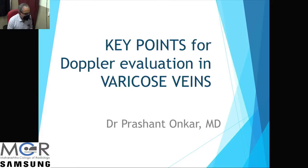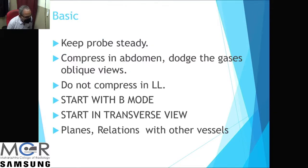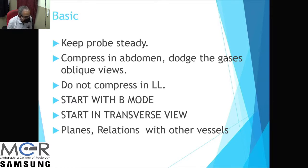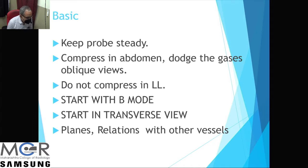We will rush through the key points in Doppler evaluation of varicose veins. First and foremost, keep your probe steady. We are in the habit of moving the probe for abdomen, obstetrics, and pelvis scans, but here the area of interest is very small — hardly five to ten millimetres — so we need to keep the probe steady and follow the course of the vessel. Compression is used to reveal normalcy of the vein.